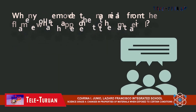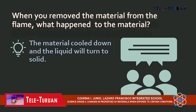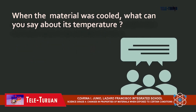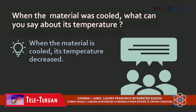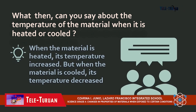When you remove the material from the flame, what happened to the material? The material cooled down and the liquid turned into solid. When the material was cooled, what can you say about its temperature? When the material is cooled, its temperature automatically decreases. What then can you say about the temperature of the material when it is heated or cooled? When the material is heated, its temperature increases. But when the material is cooled, its temperature decreases.